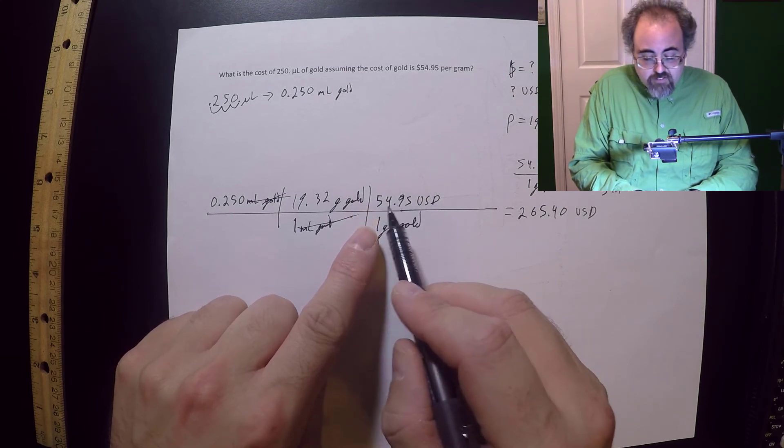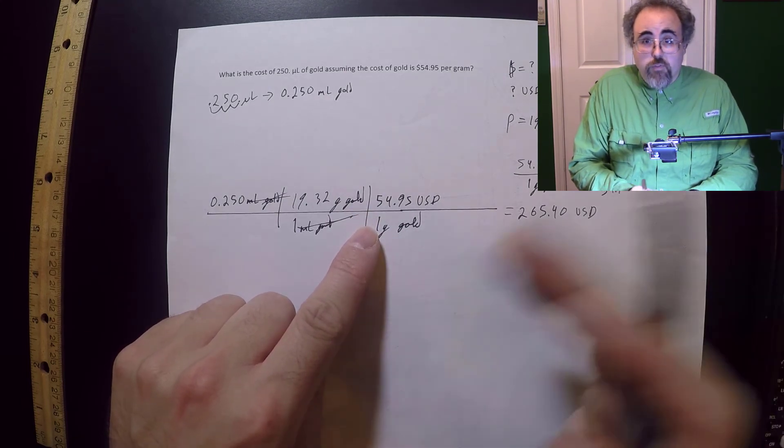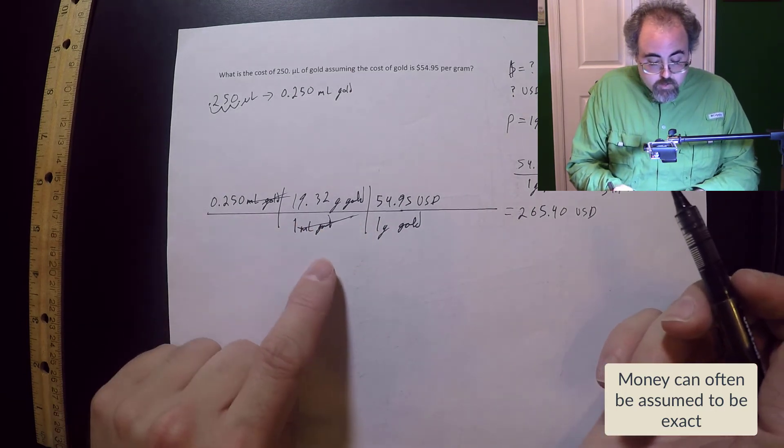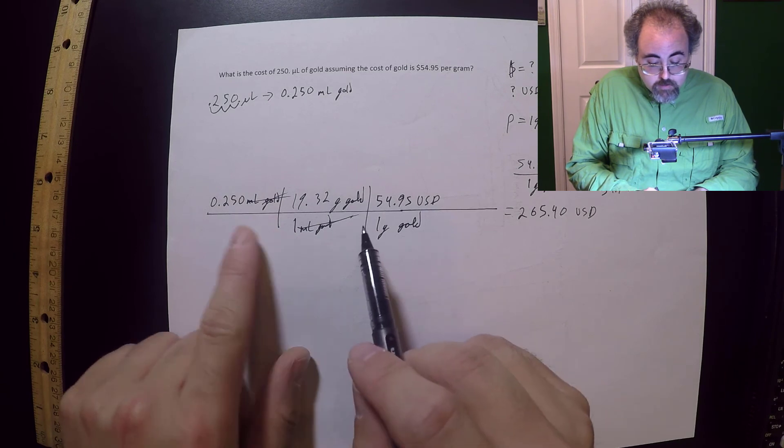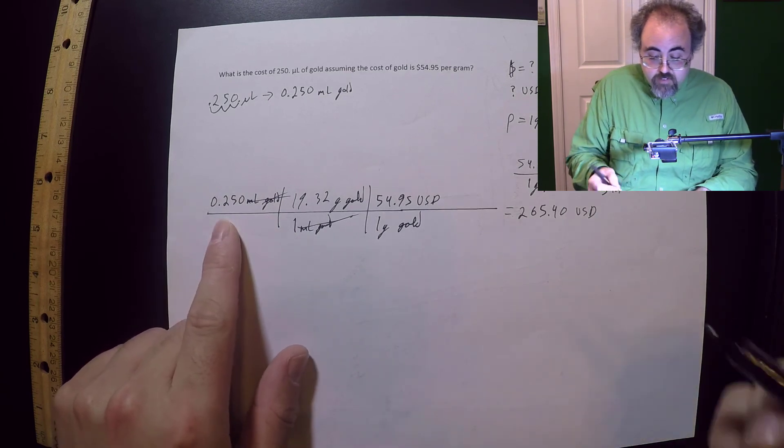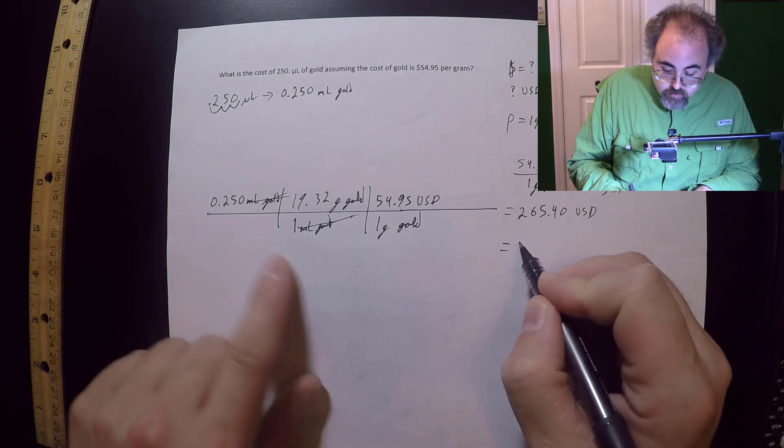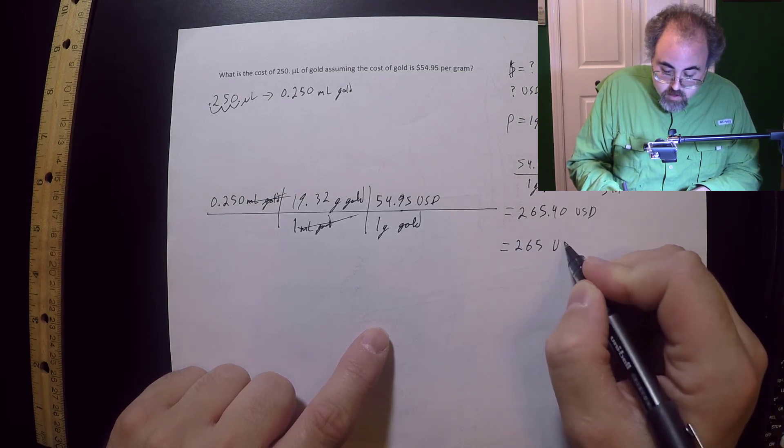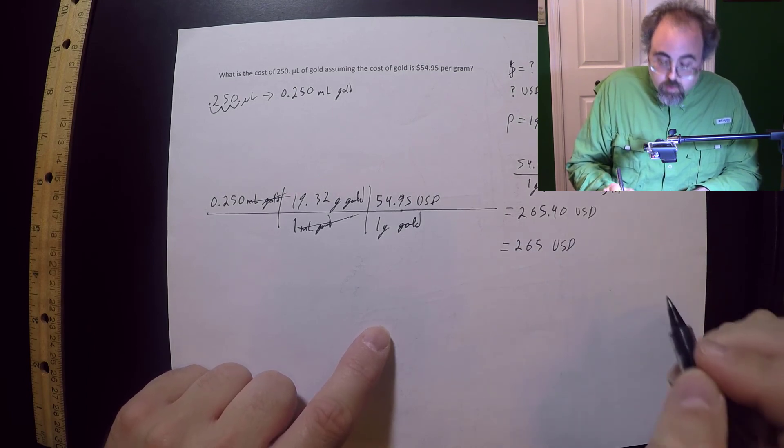Even if this said $54, I would assume that was four. You always assume your cents are legit in your money. Therefore, that means three sig figs. So I would say this is $265 worth of gold.